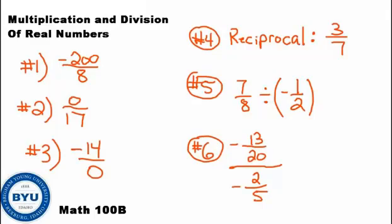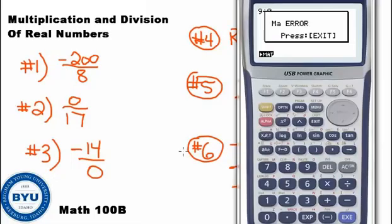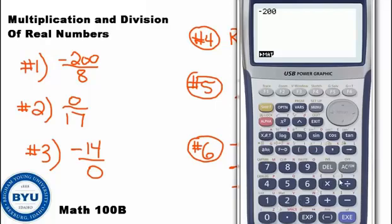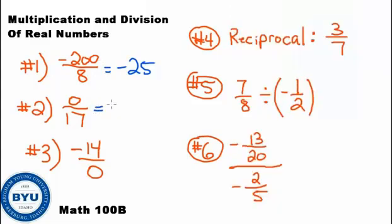Okay, how'd you do? Let's find out. So negative 200 divided by 8. Again, we could use our calculator for this if we'd like. I would go negative 200 divided by 8 and push the enter button. We get negative 25. Another way you could have actually done this is type in this as a fraction. Division and fractions are basically the same thing. And so you could have typed it in as a fraction as well. You would have gotten the same answer. Zero divided by 17. Remember that zero divided by anything is zero. And negative 14 divided by zero. Well, that's undefined. Don't forget that.